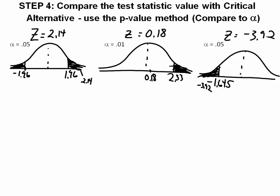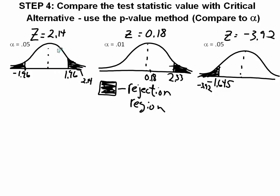Looking at our two-tailed test, the shaded area represents our rejection region. If our z-value computed in step three falls in that rejection region, then we're going to reject the null hypothesis. In this case, our z-value is 2.14. We plot it on our graph that we drew in step two, and we find that it is indeed in the rejection region. So in this case, we're going to reject the null hypothesis.